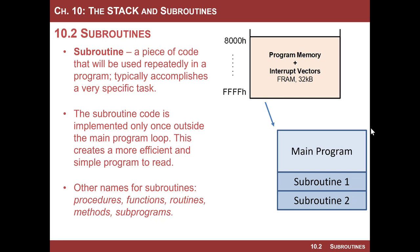So what is a subroutine? It is a piece of code that will be used repeatedly in a program. When this happens, you could certainly implement this repetitive code by copying and pasting instructions in the main program loop over and over every time you needed to use it. One of the issues, though, is that every instruction statement that you put in your assembly code will actually be assembled into an opcode and an operand or set of opcodes, and it actually takes space in program memory.